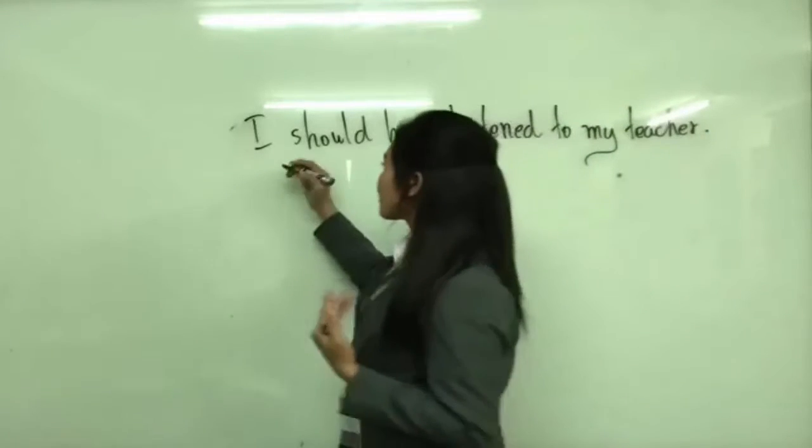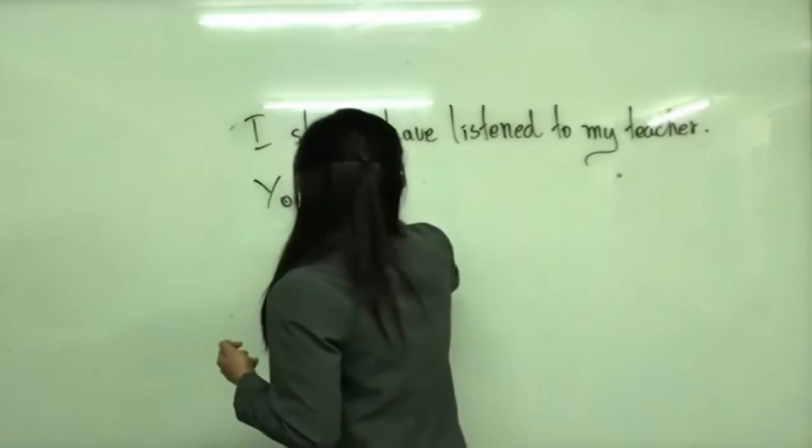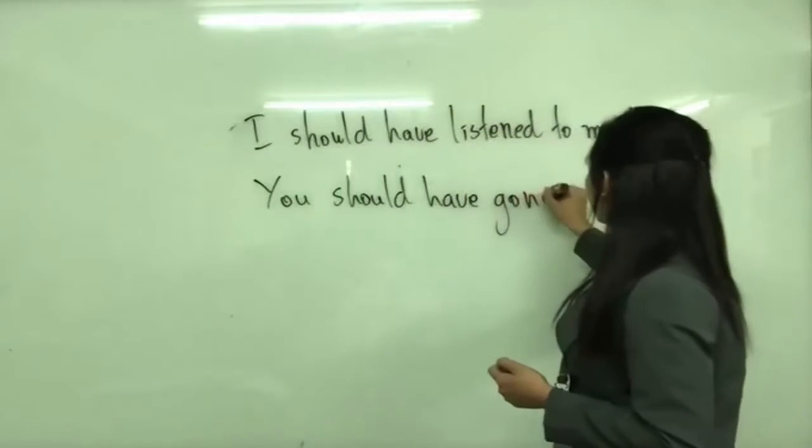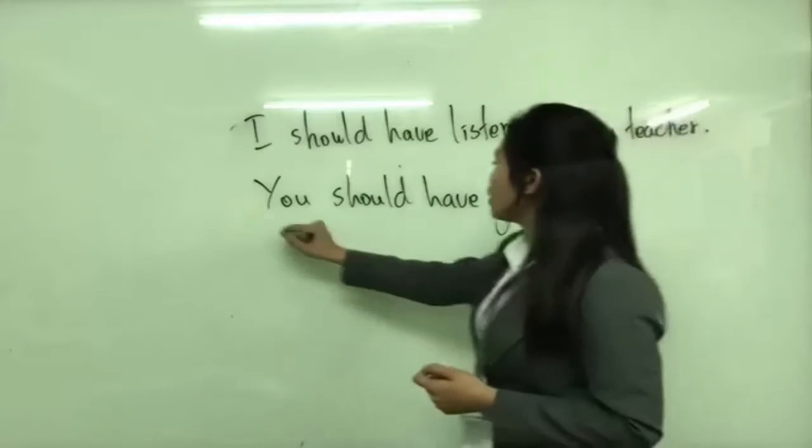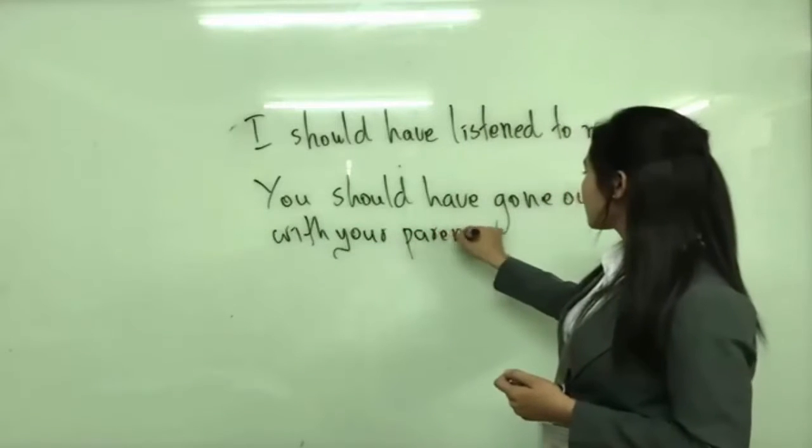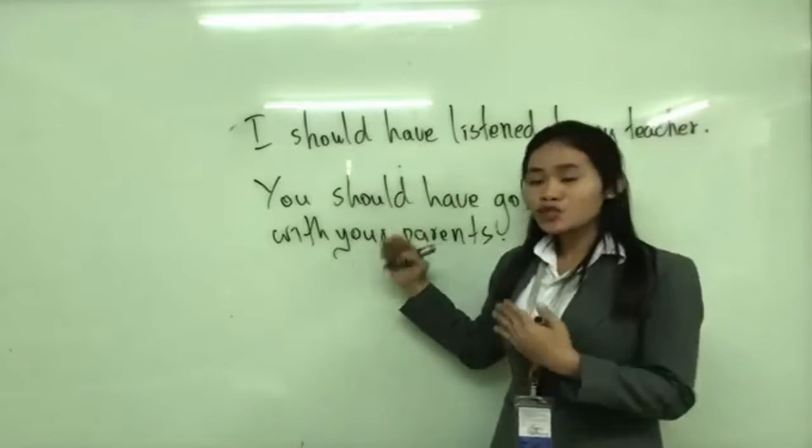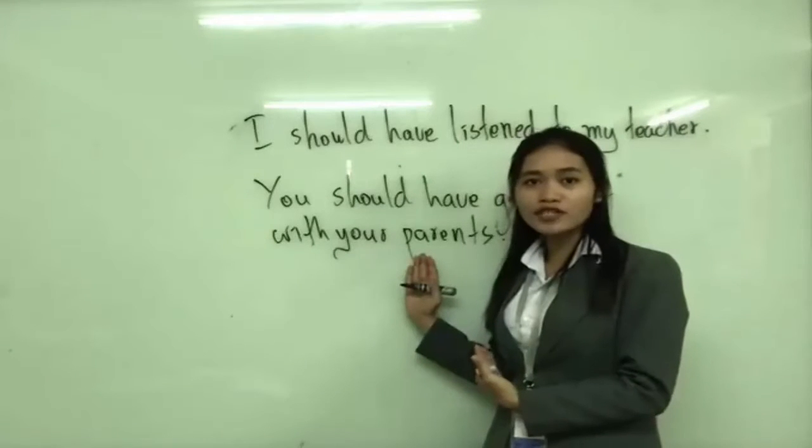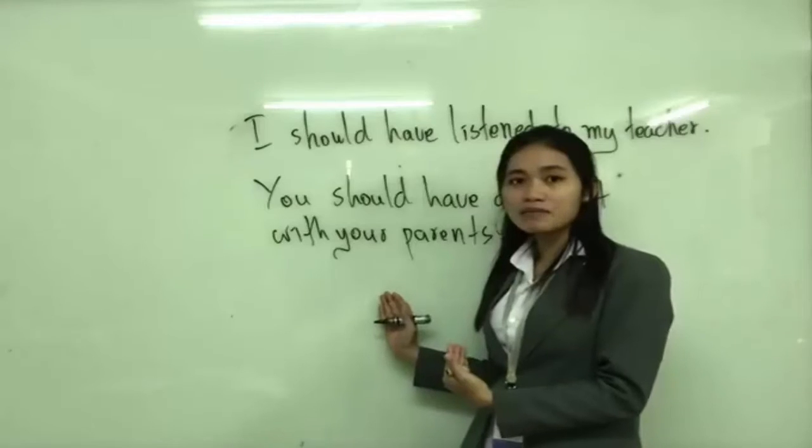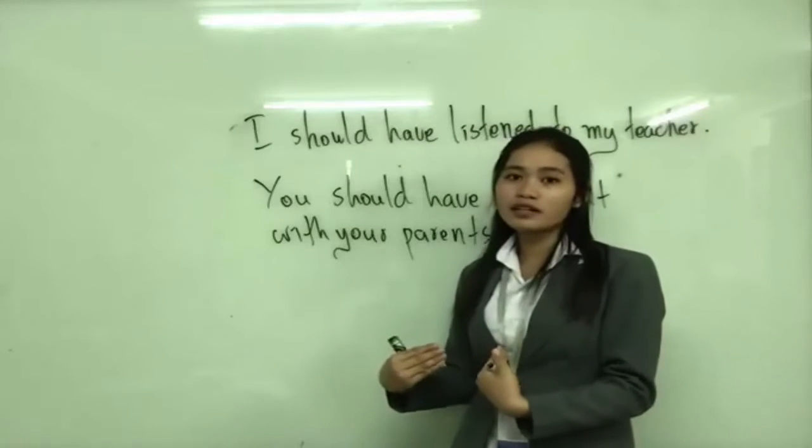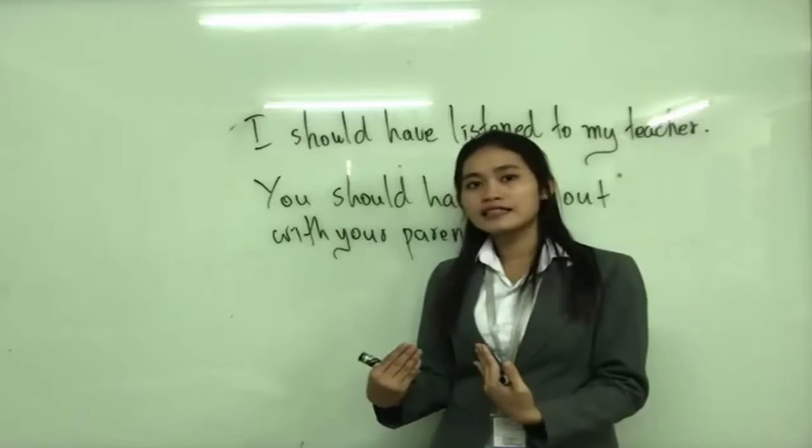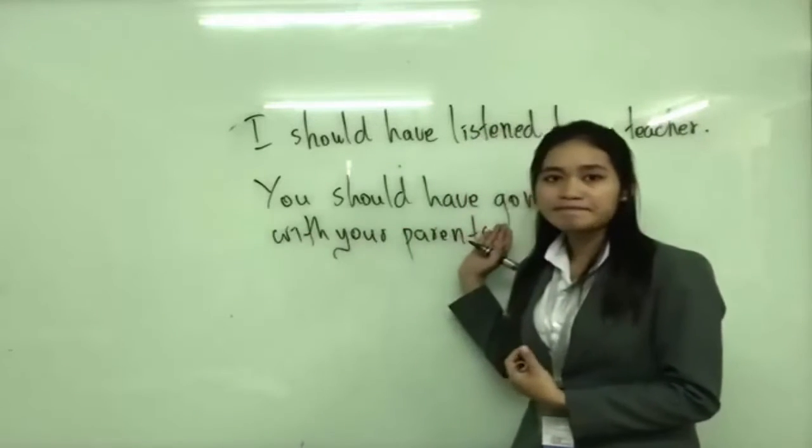Another sentence is you should have gone out with your parents. In this sentence, it means you just stayed home. You didn't go out with your parents. Maybe the robber came to your house and stole something and caused some trouble to you. So your parents will feel some regret that you didn't go out with them.